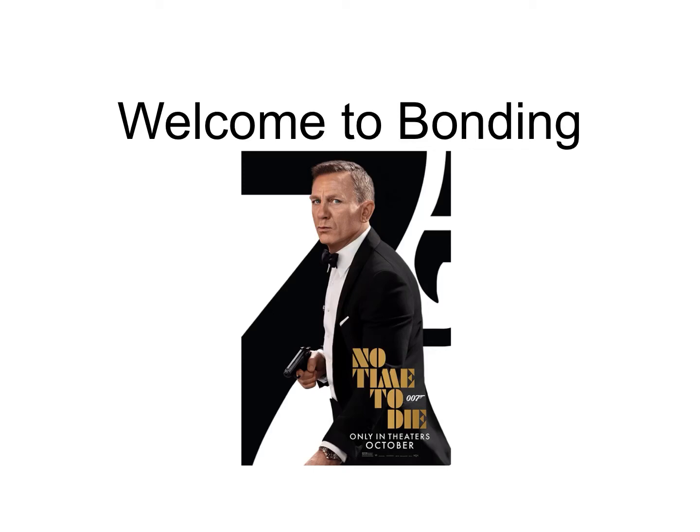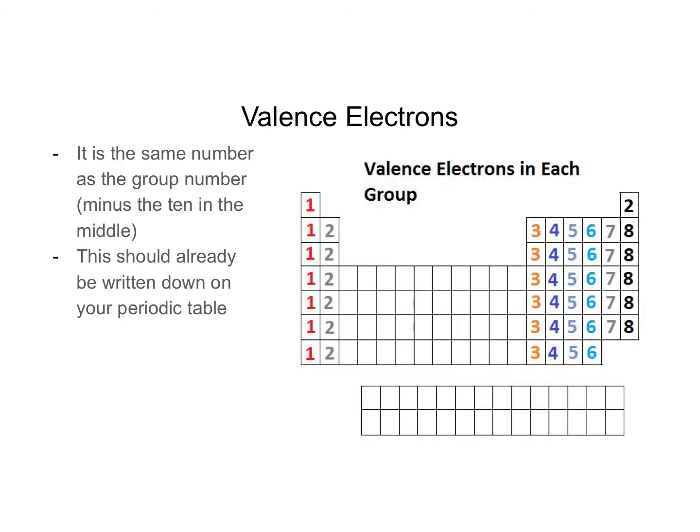Welcome back everybody to our lessons about bonding. We will continue talking about the basics and the Lewis structures that go with them. Just as a reminder, valence electrons are an important part of bonding — they are the ones that interact. On our periodic table, we already numbered them.